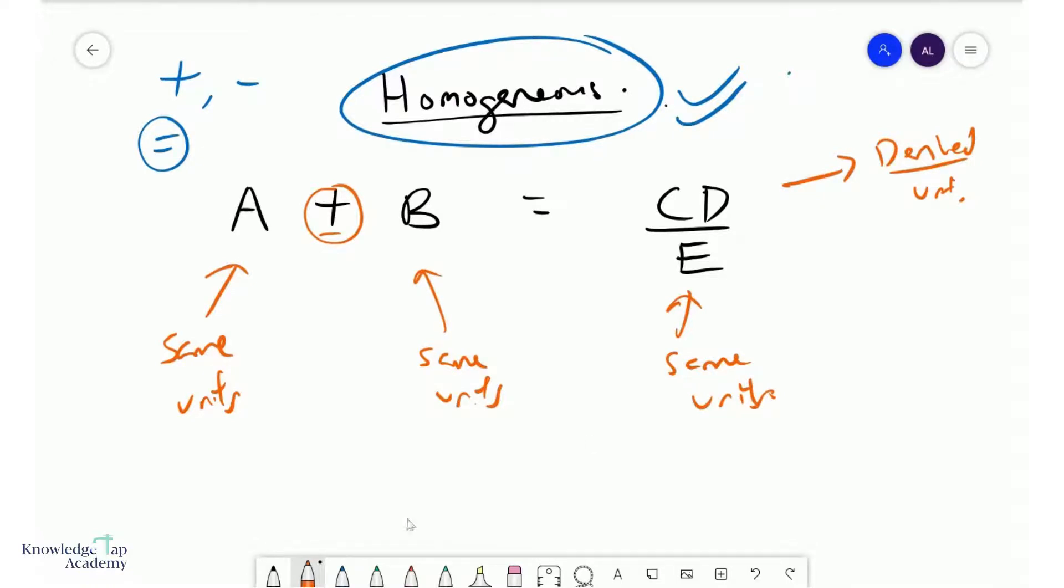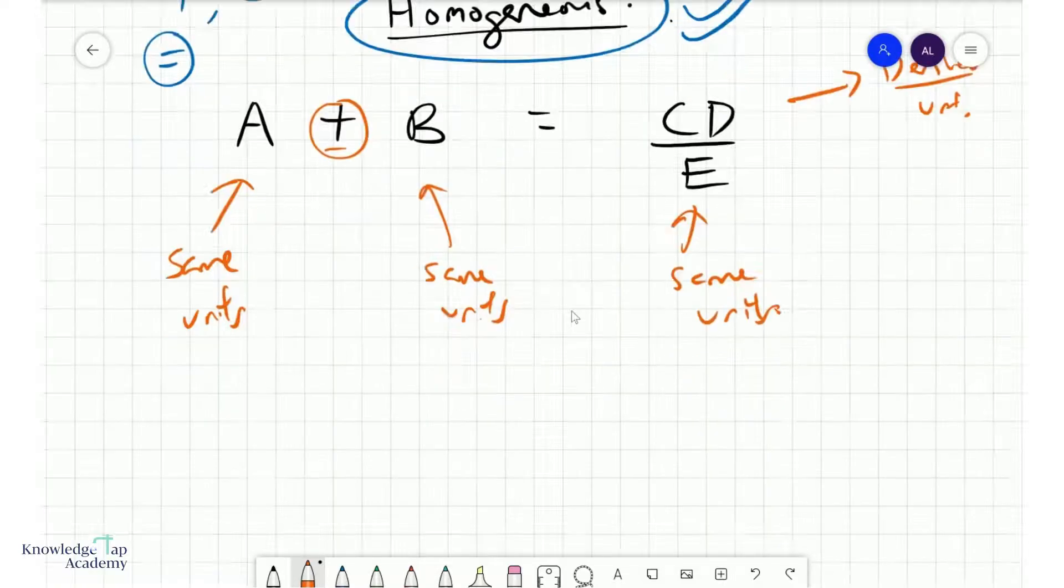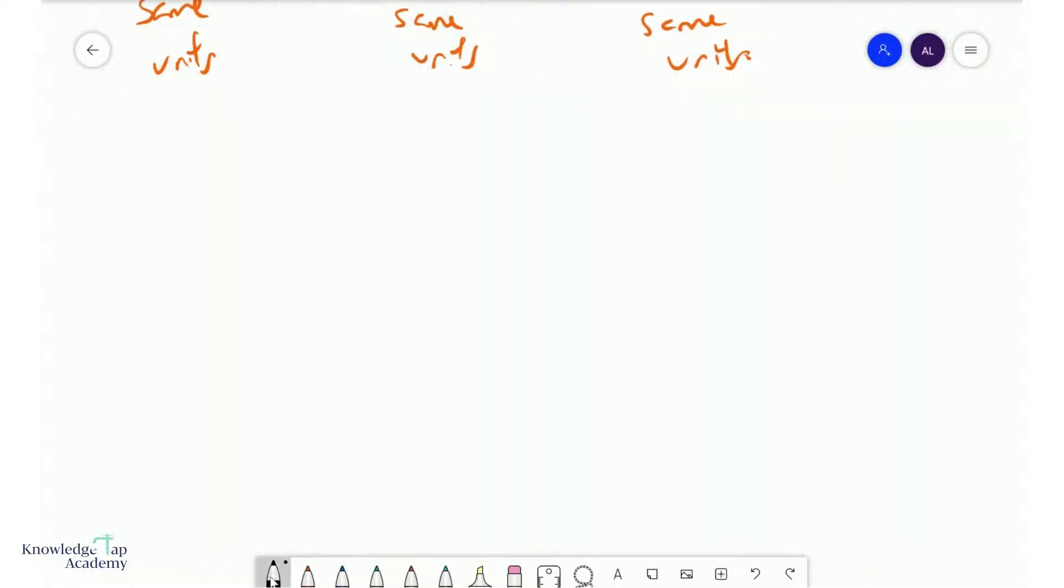So that is homogeneous. Let's look at an example of this. So a nice simple one to look at would probably be, well, how about this? Power equals to force times distance.